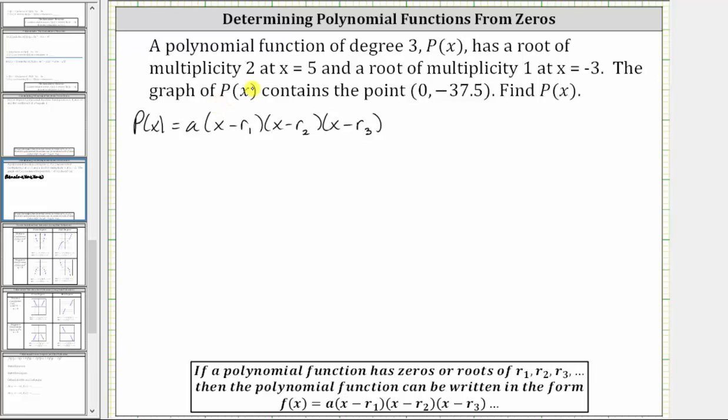Looking at the given information, we are told the polynomial function has a root of multiplicity two at x equals five, which means x equals five is a double zero or double root, which means two r values will be positive five. Let's let r₁ equal five and r₂ equal five. And then we have a root of multiplicity one at x equals negative three, which means this is a single root or single zero, and therefore r₃ is equal to negative three.